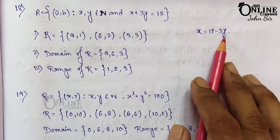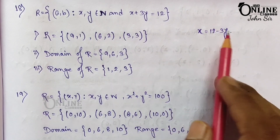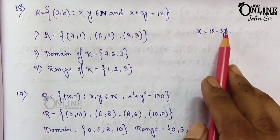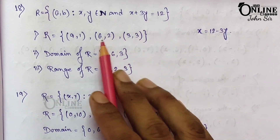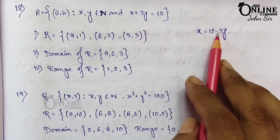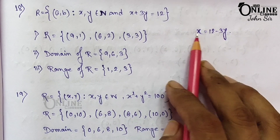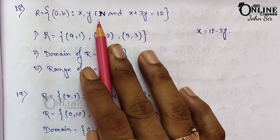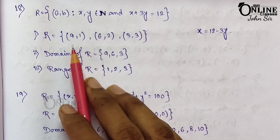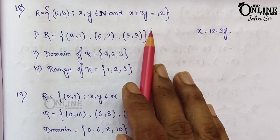Since x,y belongs to natural numbers, start with y = 1: x = 9. If y = 2, then 12 − 6 = 6, so x = 6. If y = 3, then 12 − 9 = 3, so x = 3. If y = 4, then x = 0, but 0 is not a natural number. So the ordered pairs are (9,1), (6,2), and (3,3).